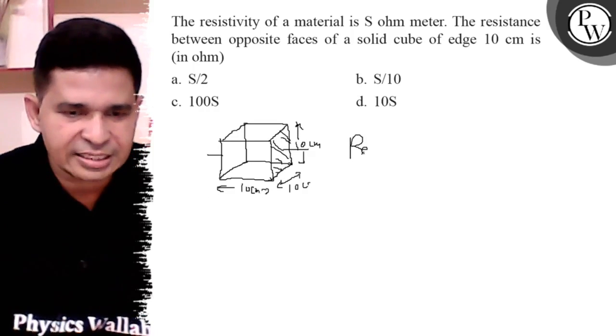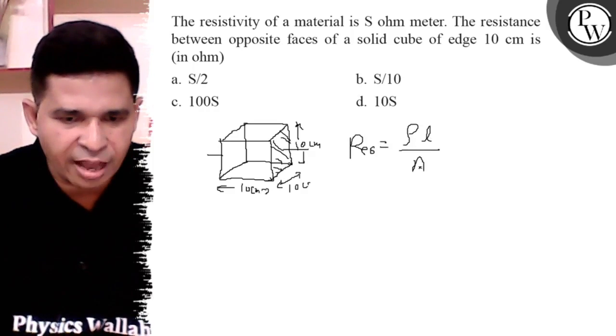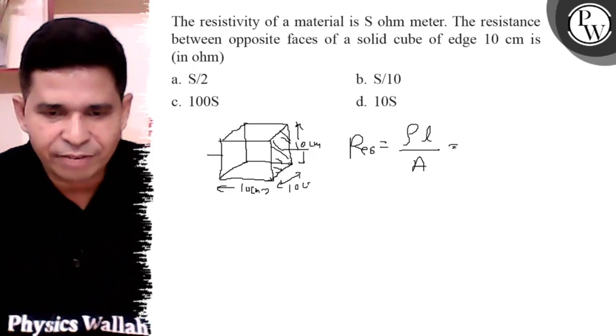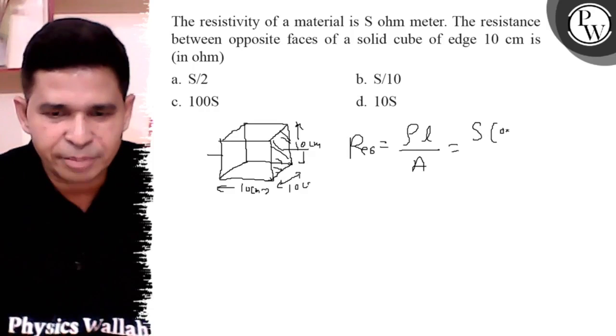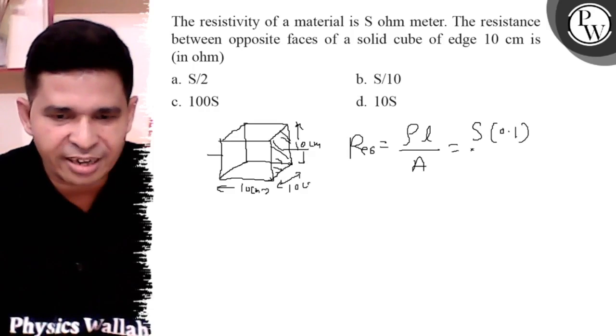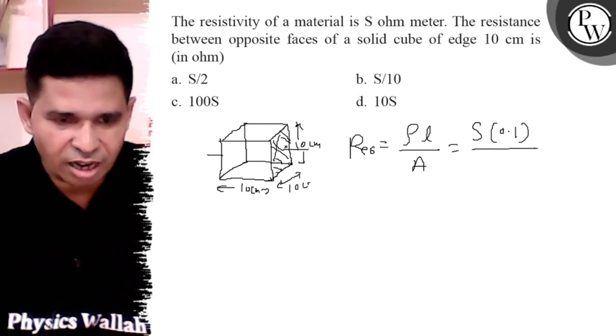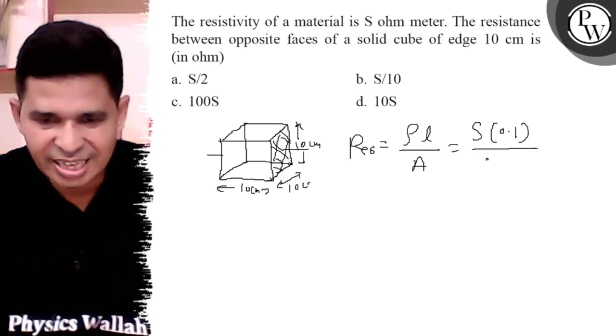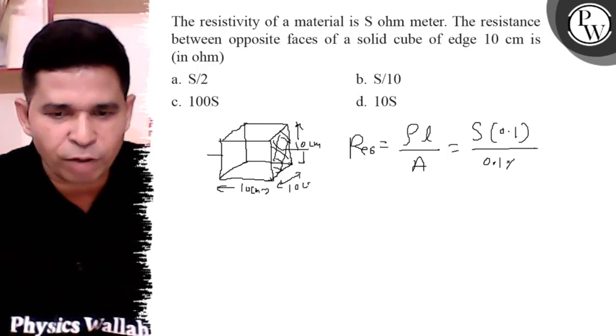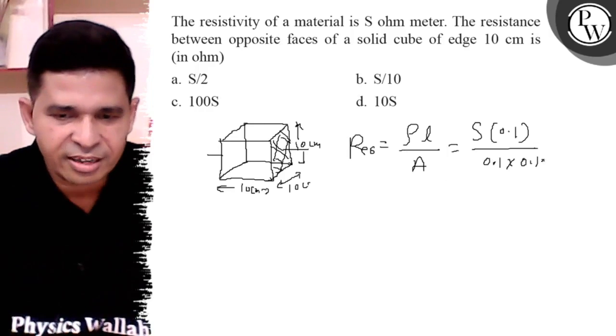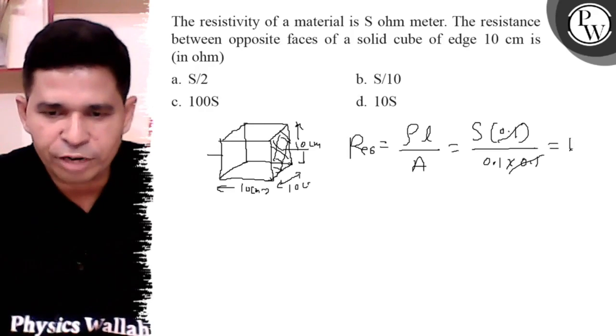So what is R? Resistance is equal to rho L upon A. Rho is given as S. Length is given 10 centimeter, that is 0.1 meter. Area of that square, that colorful square, is 10 centimeter into 10 centimeter, but in meter 0.1 into 0.1 meter. So 0.1 cancels, S upon 0.1 is 10S.